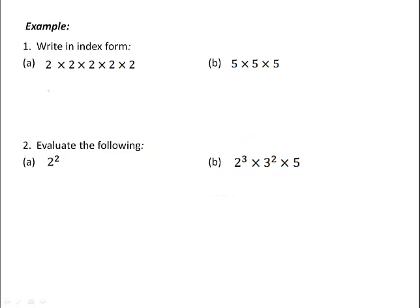To write the following in index form, we look at how many times the number is multiplied by itself. For example, 2 is multiplied by itself 5 times, so the base number is 2 and it is written to the power of 5. In this example, we have 5 times by itself 3 times, so 5 would be the base number and it would be written to the power 3.